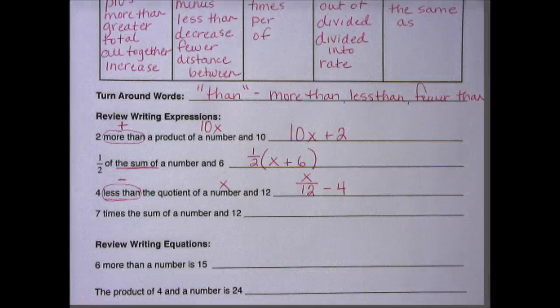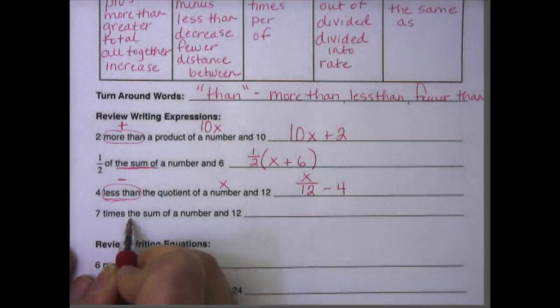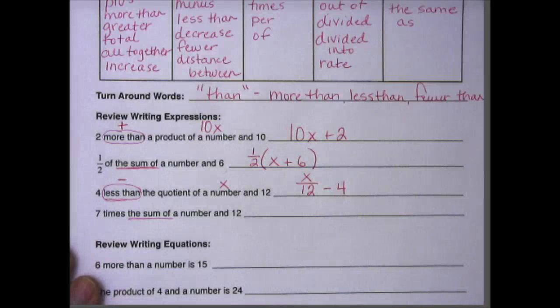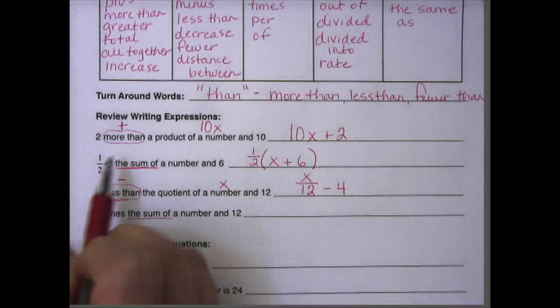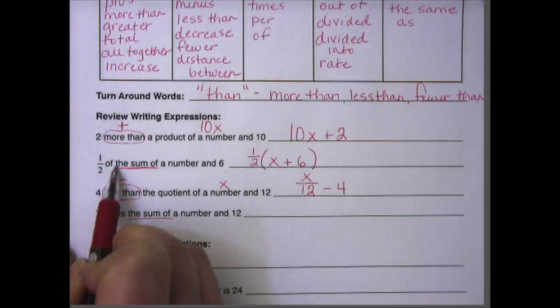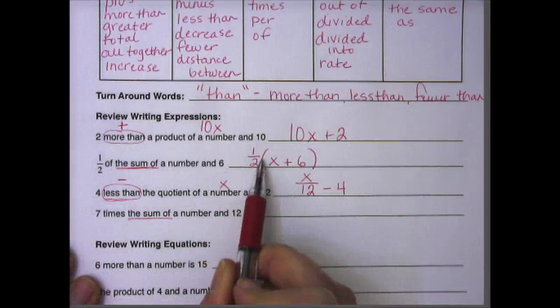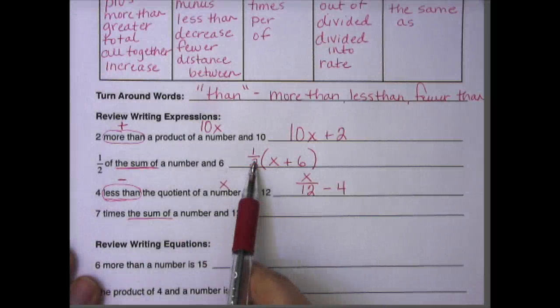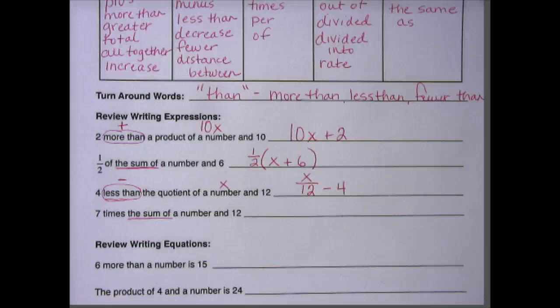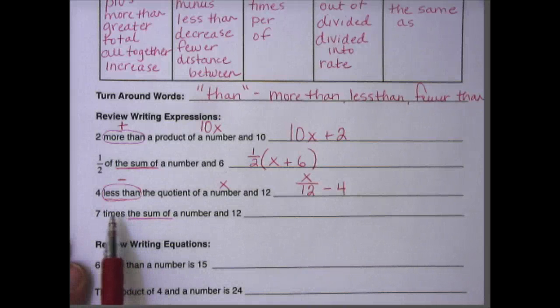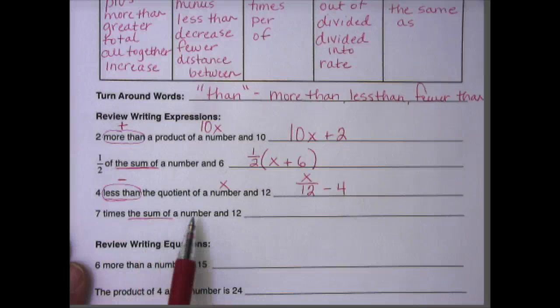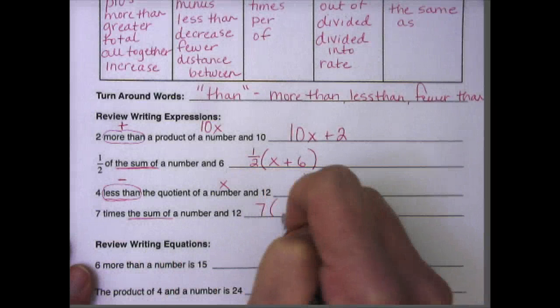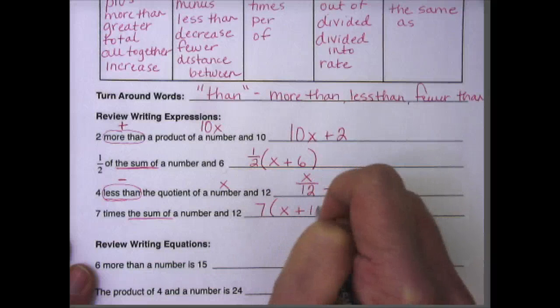Let's take a look at the next one. 7 times the sum of a number and 12. Again, there are the words the sum of. So also up here, let's just take a look back here. We see the word of means to multiply, and remember that when I write something right next to these parentheses, that means that we are multiplying one half times x + 6, or times the sum of x + 6. Same thing here. 7 times the sum of a number and 12 means that we're going to have parentheses. 7(x + 12).